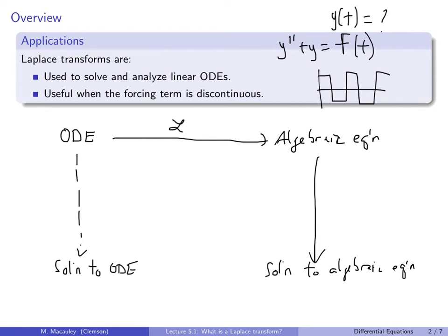Then you do the Laplace transform in reverse: you ask what function gave you this algebraic equation, and that's called the inverse Laplace transform. So we'll show you how to do the Laplace transform, you already know how to do the algebra, and then we'll show you the inverse Laplace transform, and what you get is the solution to the original differential equation.